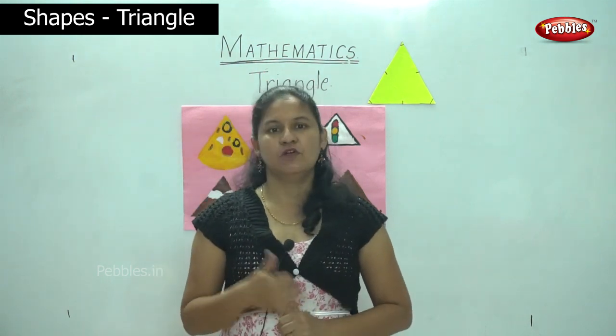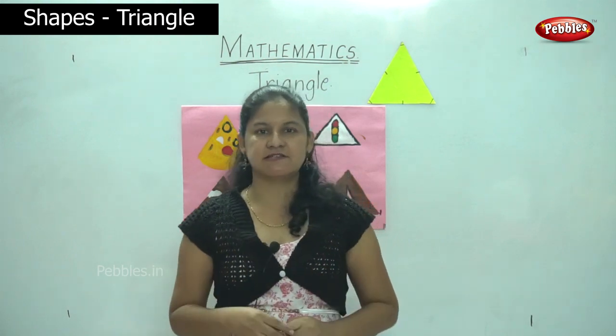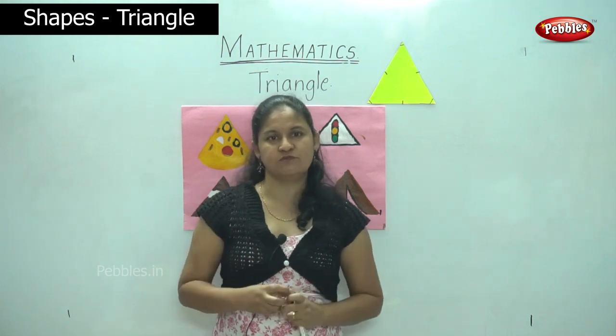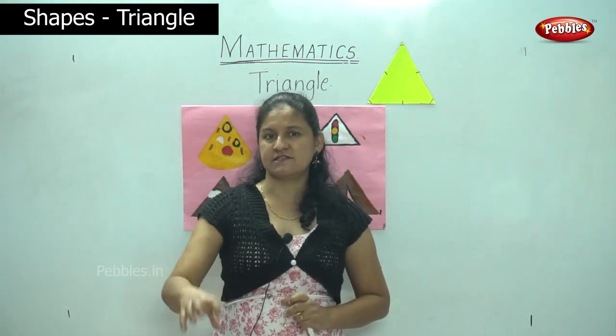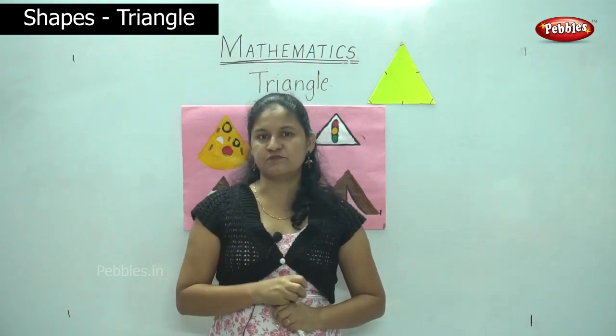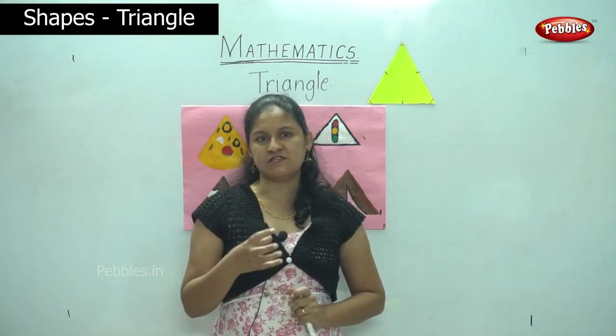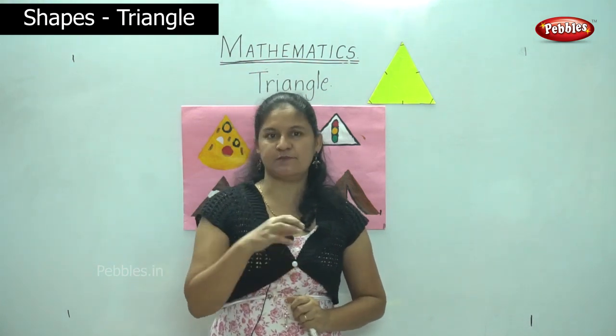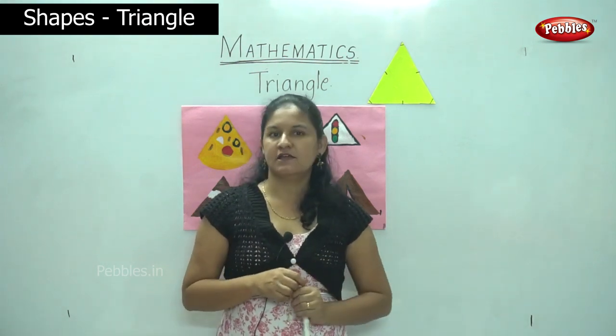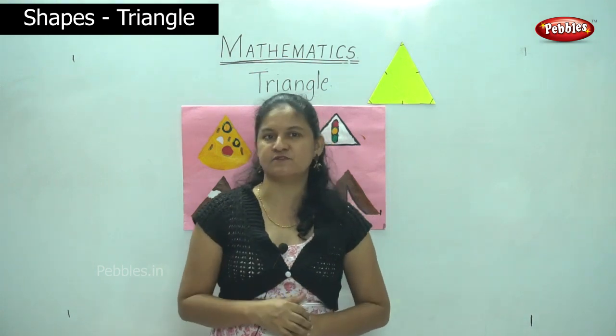I hope you have enjoyed watching these three shapes and the examples. A small activity for you when you are at home: you can collect small objects and segregate them or separate them according to their shape. The objects in the shape of a circle you can keep in one cup, then the objects in the shape of a triangle you can keep separately, and the objects in the shape of a square you can keep separately. This will help you to learn the different types of shapes.